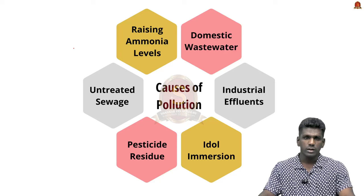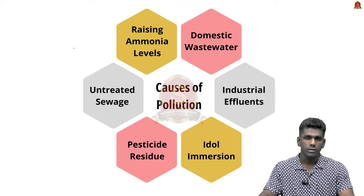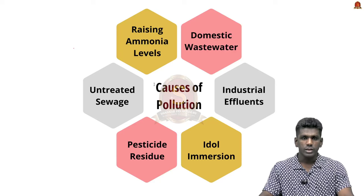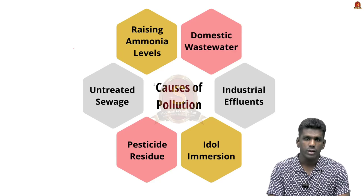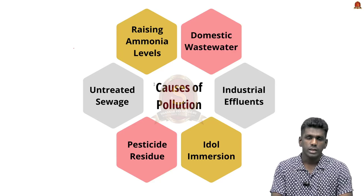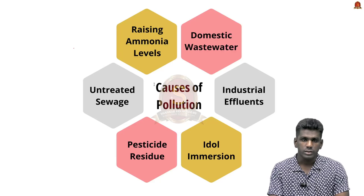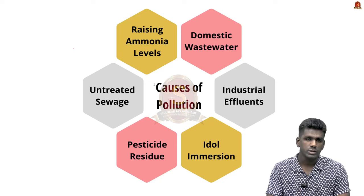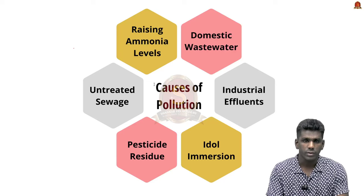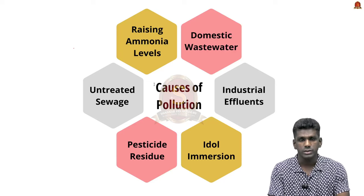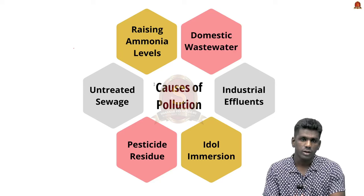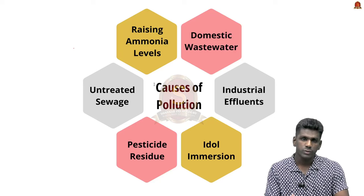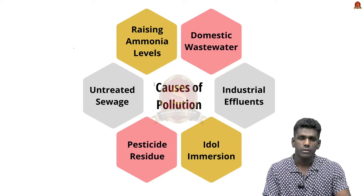What are the causes for huge pollution in Yamuna River? The important causes are domestic wastewater which is fled into Yamuna River, industrial effluents, emulsion of idols during rituals, pesticide residue from agriculture, and untreated sewages. This causes a rise in ammonia level and leads to huge pollution in Yamuna River.